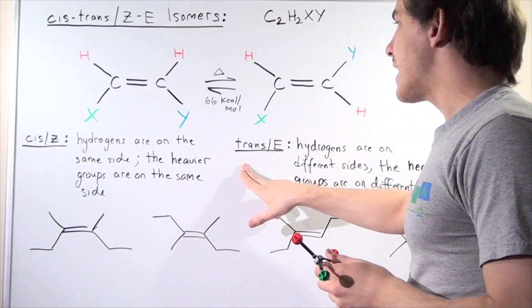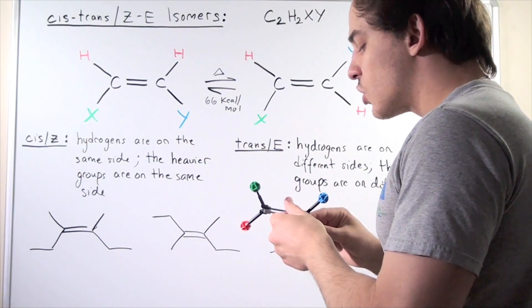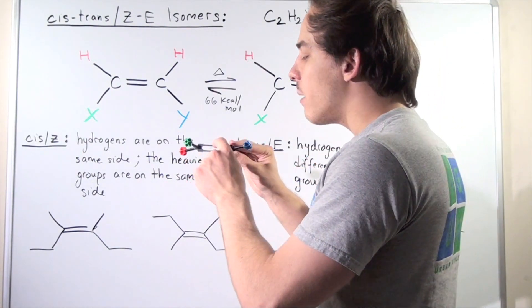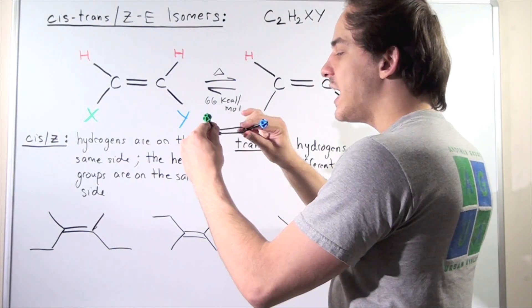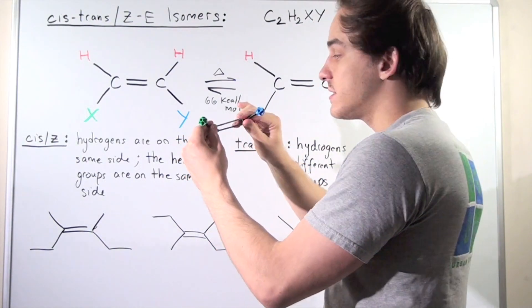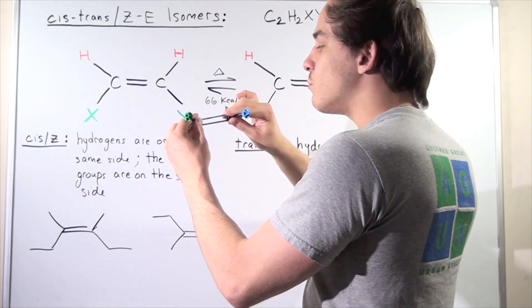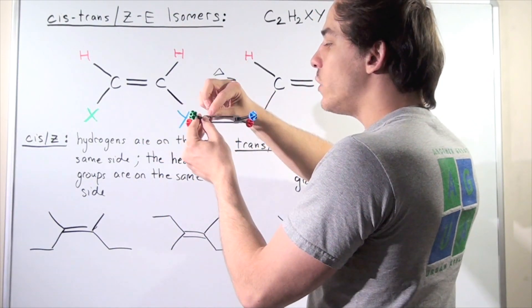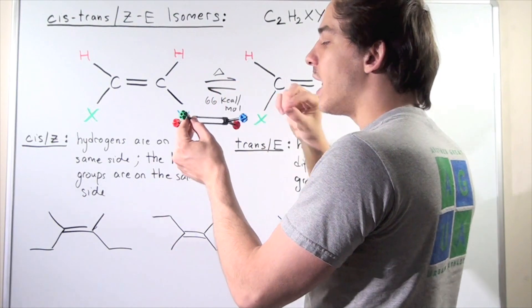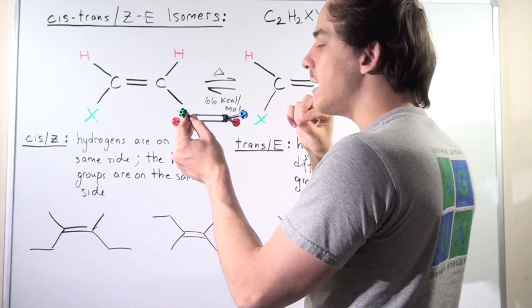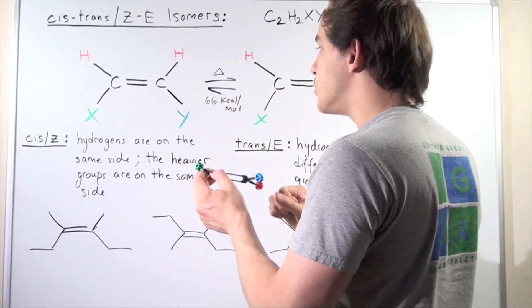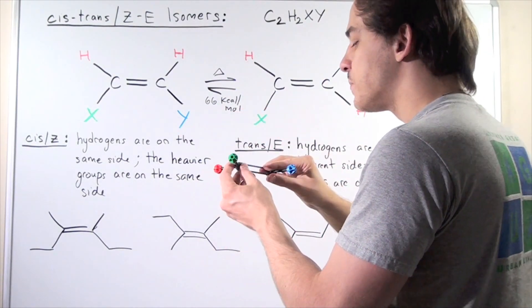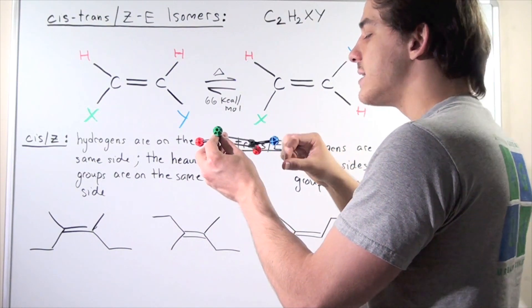What about trans or E? Well, let's recall another important detail about alkenes. Alkenes have double bonds, and that means we can't rotate this molecule. The only way we rotate this lower bond is if we break the pi bond. The only way we break the pi bond is if we input energy. So let's say we input energy, exactly 66 kilocalories per mole of energy, then we'll break the pi bond.